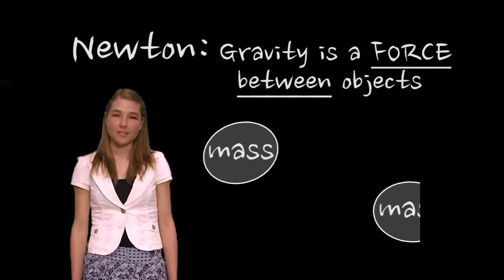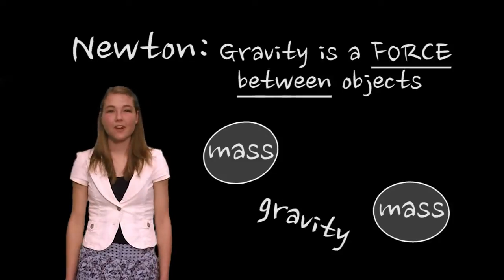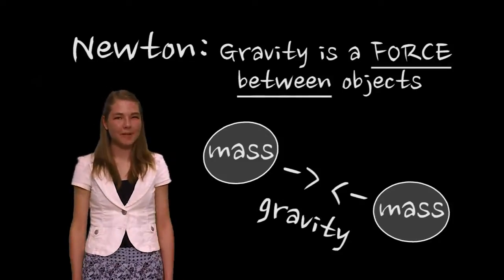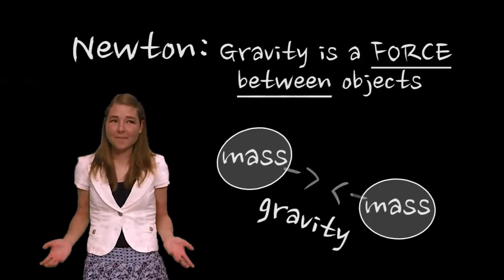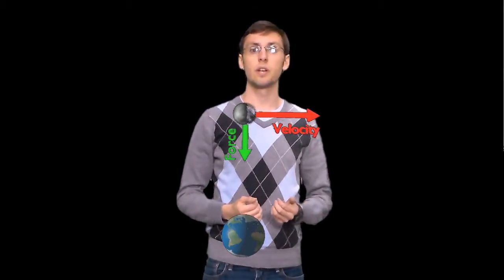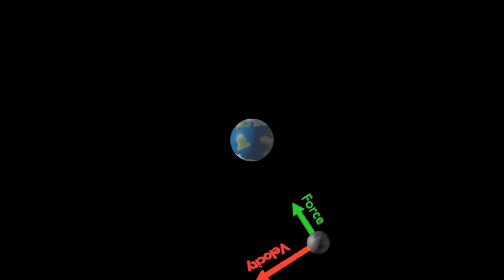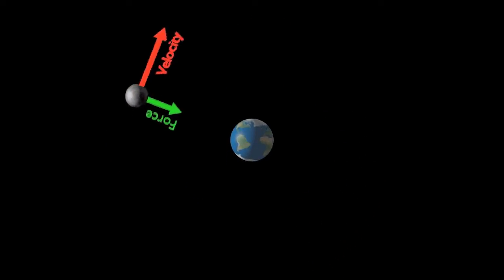According to Newton, gravity is an attractive force which acts between two objects that have mass. This means that gravity always tries to pull objects together. How does this explain the orbit of the moon, though? Wouldn't that mean that the moon would be pulled towards the earth until they collide? It would, if it weren't for the moon's own velocity. As the moon orbits the earth, its velocity carries it forward in a straight line. Gravity pulls the moon in towards the earth and changes its trajectory. This continued motion as it is pulled in is what makes the moon stay in a circular orbit instead of flying off into space.